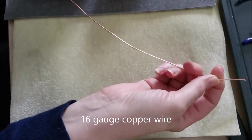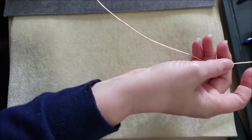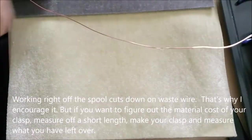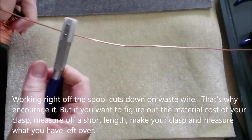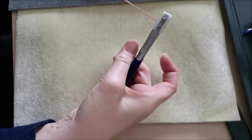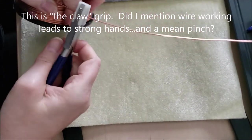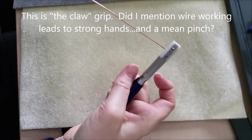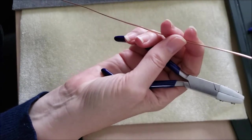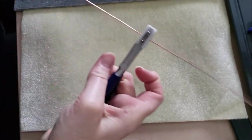The first thing you have to do whenever you are going to work right off the spool is you need to straighten your wire. Basically I'm holding the wire, holding it firmly on the spool and I'm pulling it through the nylon jaw pliers. What that does is it helps take some of the irregularities out of the wire and it also helps harden it ever so slightly.